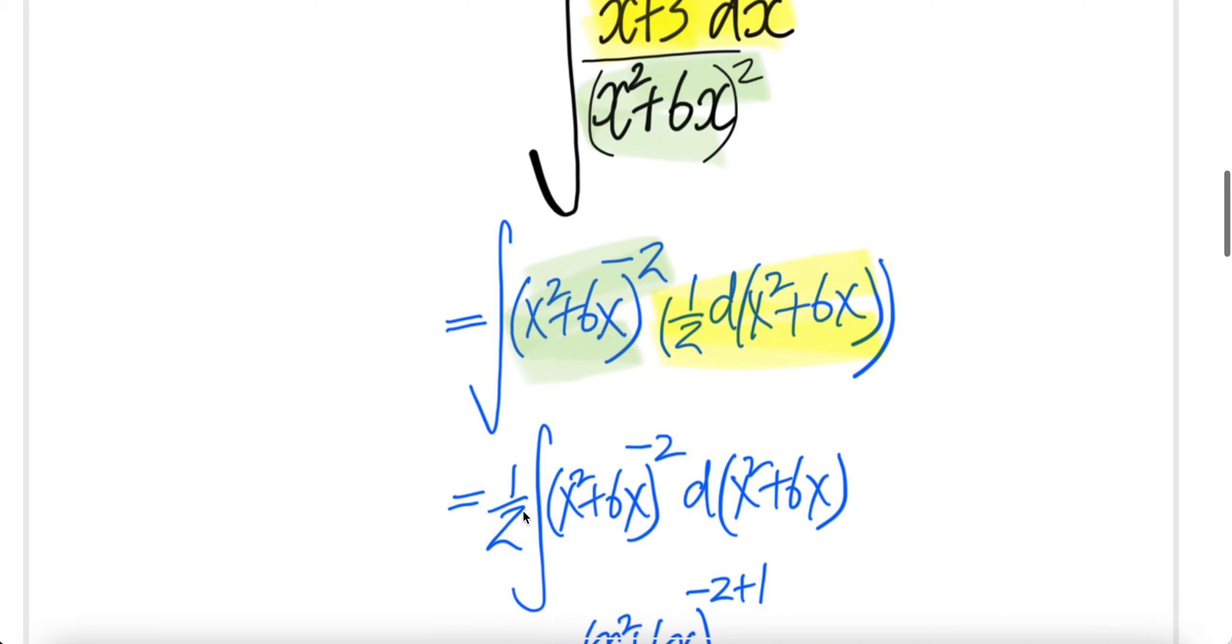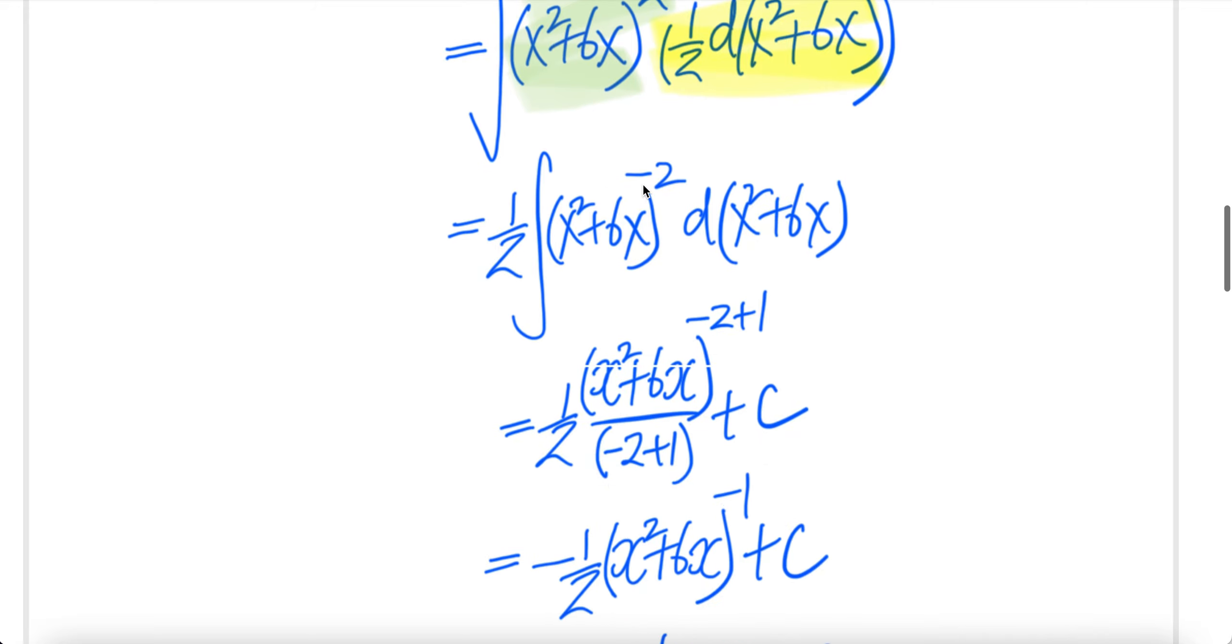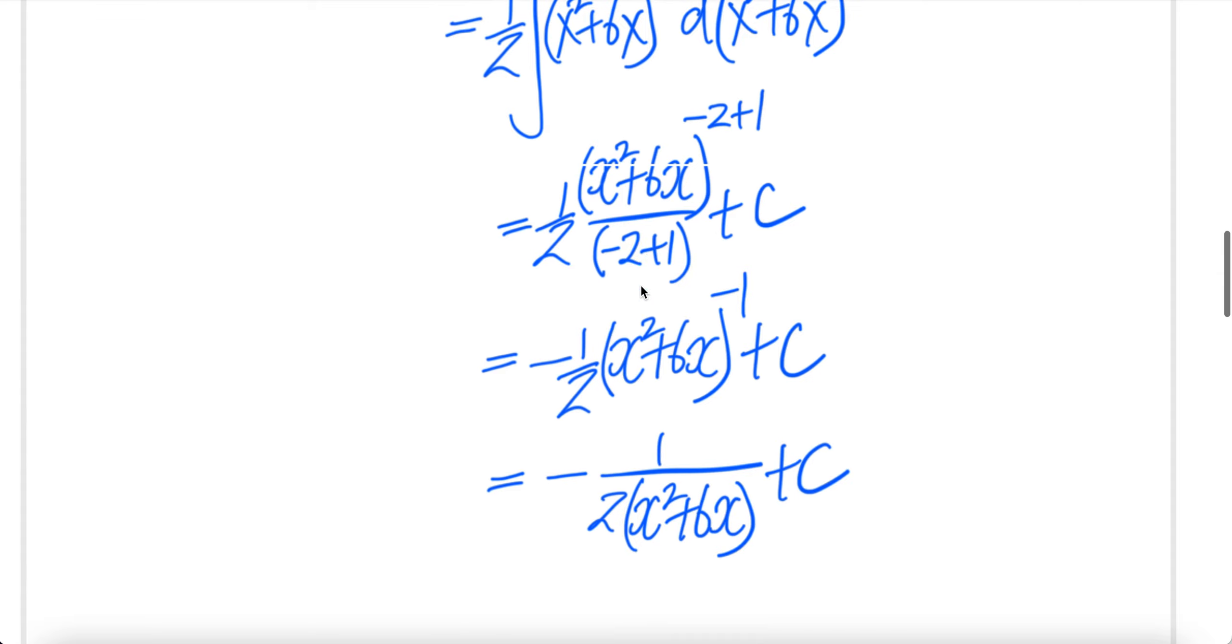Half constant of the integral, and then you're left with this and d of x squared plus 6x. Now this is a simple integral. Integral y to the power of minus 2, dy is y minus 2 plus 1 over minus 2 plus 1 where y is x squared plus 6x.